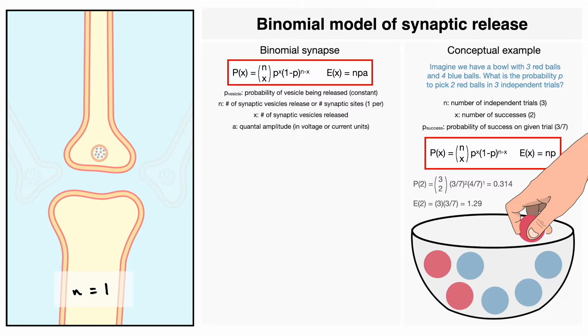Now, let's do a quick example to see how these variables operate. Imagine a synapse with only one synaptic site, so n equals 1. If the probability of release is 0.4 and the quantal amplitude is 2 millivolts, what will be the probability to release 1 vesicle? Also, what will be the average response at this synapse?